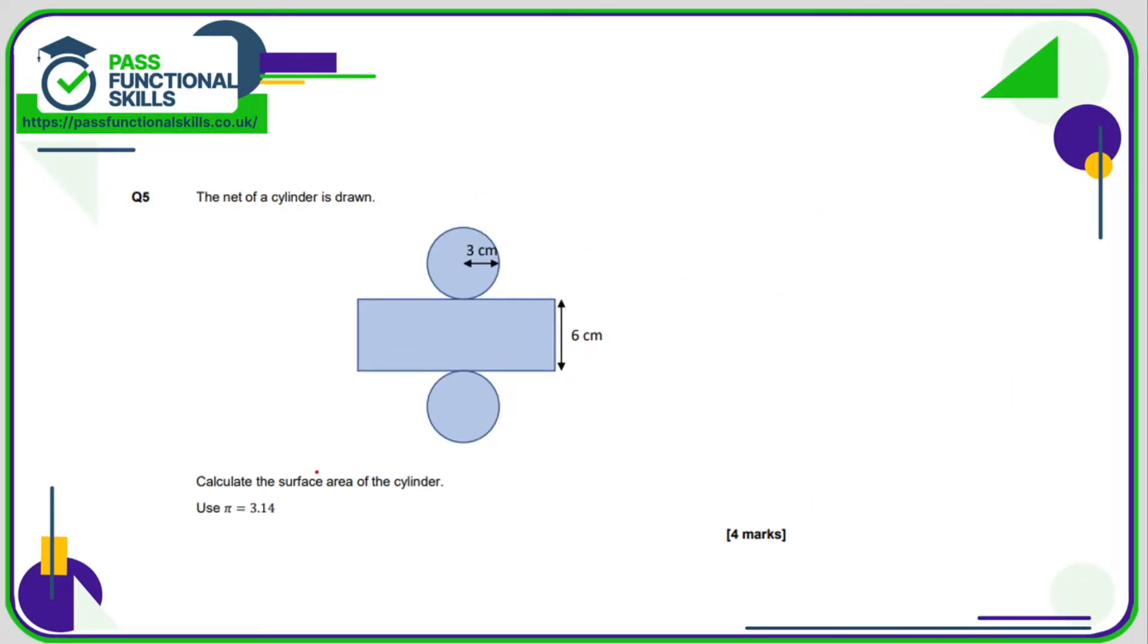Question number five: so here we're using pi because we're dealing with a circle. So first of all we've got two circles. A circle is pi r squared, so we've got two circles, so it's going to be two lots of pi r squared. So it's going to be two times by 3.14 times by r, which is the radius, times by three times by three. So the area of the two circles comes to 56.52.